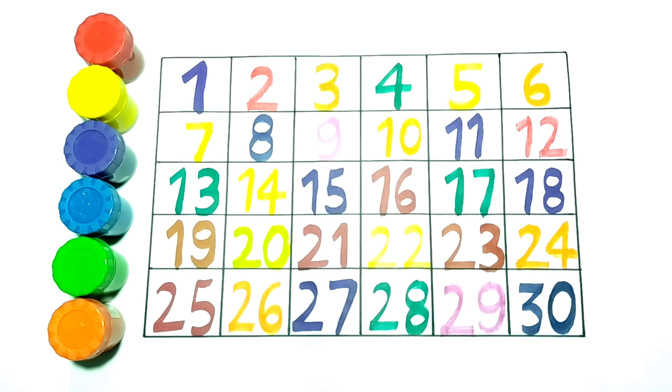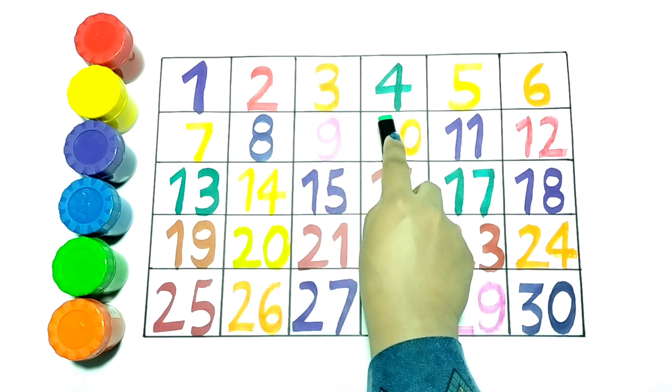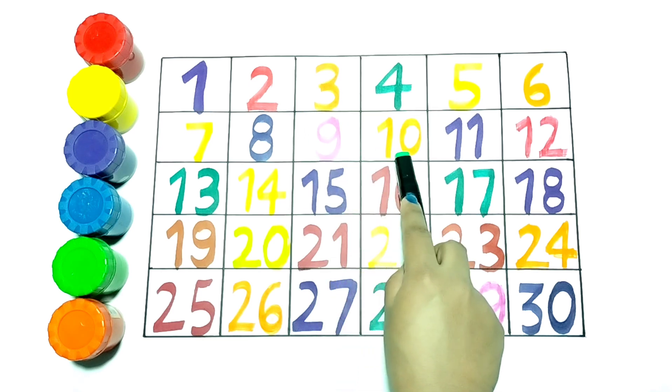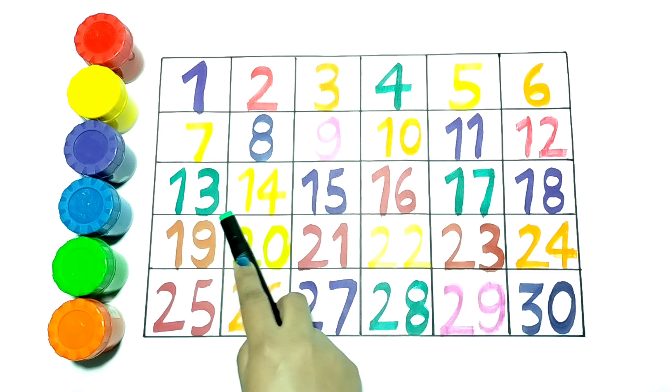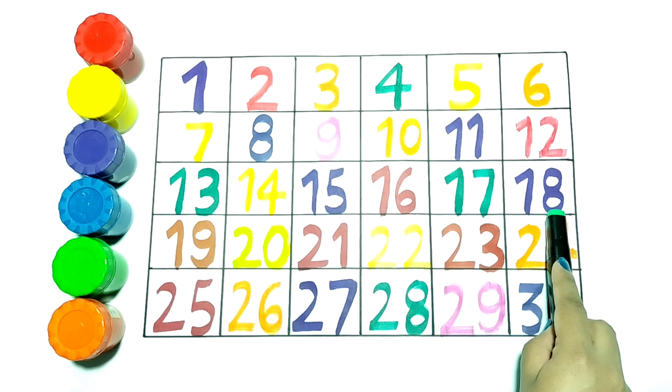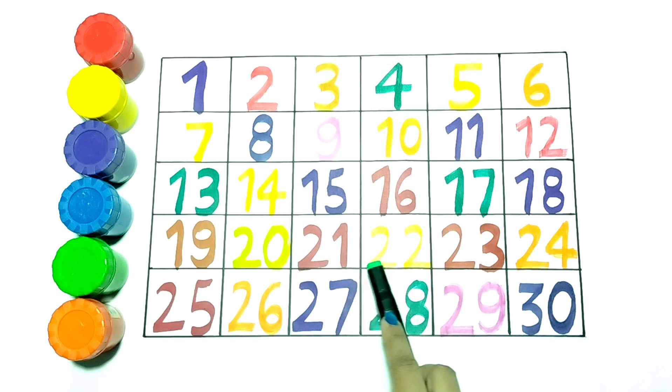Let's repeat. 1, 2, 3, 4, 5, 6, 7, 8, 9, 10, 11, 12, 13, 14, 15, 16, 17, 18, 19, 20, 21, 22, 23, 24, 25, 26, 27, 28, 29, 30.